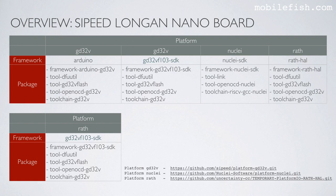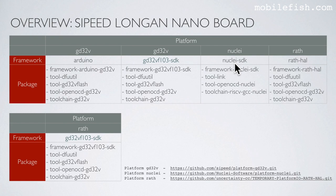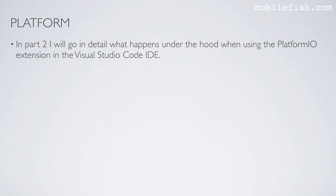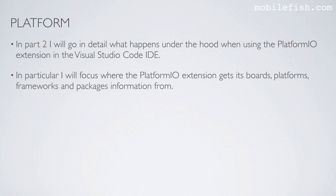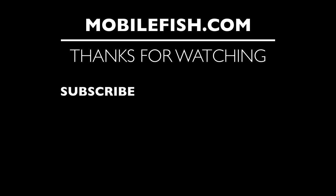This is an overview of the Sipeed Longan Nano board and its three supported platforms: GD32V, Nuclei, and RISC-V. For the GD32V platform it supports the Arduino framework and the GD32V SDK. For the Nuclei platform it supports one framework, and for the RISC-V platform it supports two frameworks. Each platform and framework combination installs specific packages. This information was gathered from GitHub repositories, and how those links were obtained will be explained in part 2. Part 2 will detail what happens under the hood when using the Platform.io extension in VS Code — specifically where it gets its boards, platforms, frameworks, and packages information from.